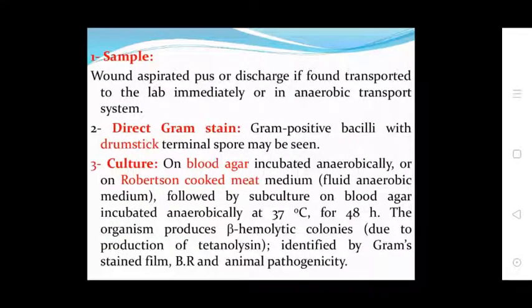Laboratory identification of the organism depends most importantly on demonstrated toxin production in mice. Sample: aspirate or discharge from the wound transported to the lab immediately in an anaerobic transport system. Gram stain may show gram-positive bacilli with characteristic terminal spores. Culture on blood agar incubated anaerobically.